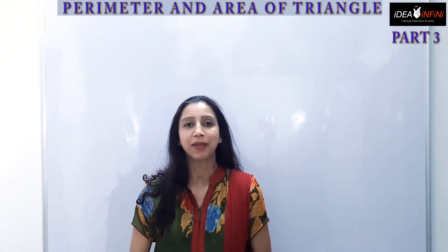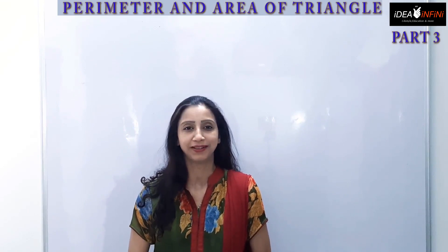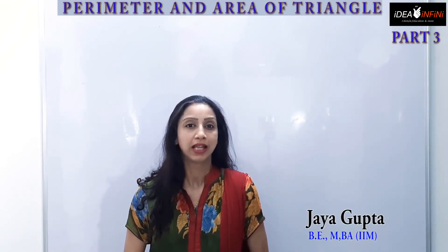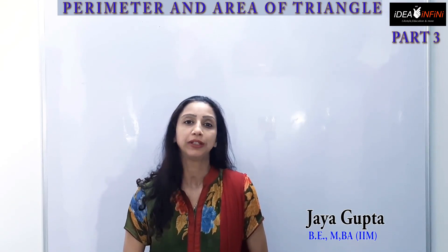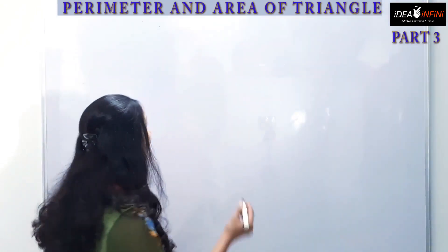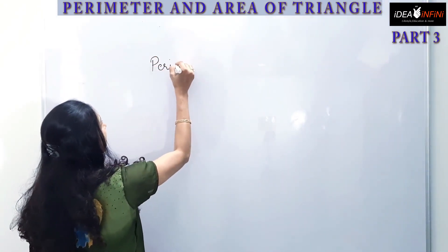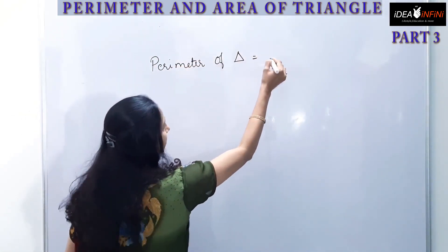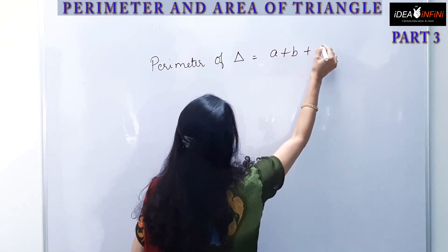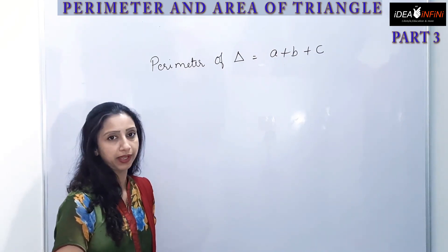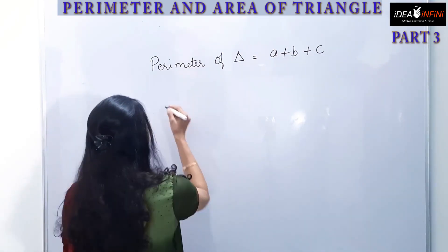Welcome to part 3 of perimeter and area of a triangle. In earlier parts we have seen how to find out the area of a triangle, perimeter of a triangle, and some important formulas regarding the perimeter and area of an equilateral triangle. Let's revise them — a quick recap will do us good. The perimeter of a triangle is the sum of all three sides. Suppose the sides are a, b, and c, so the sum of all the sides gives the perimeter.